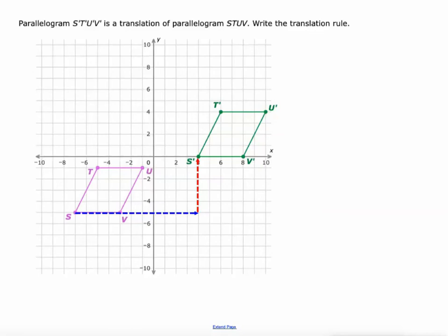So here's what our rule is going to look like. We're going to say that (X, Y), that's our original point, transforms to. And if you look at blue, we started at negative seven and went to four. That means we went 11 units to the right. So we're going to say take the original X value and add 11 to it.